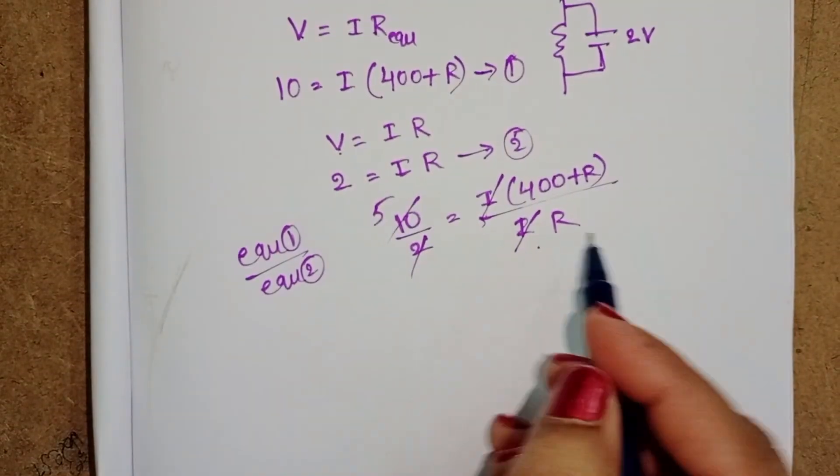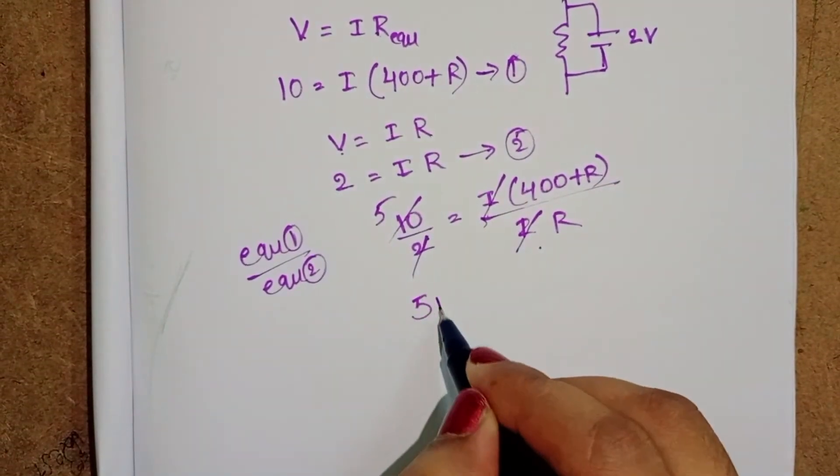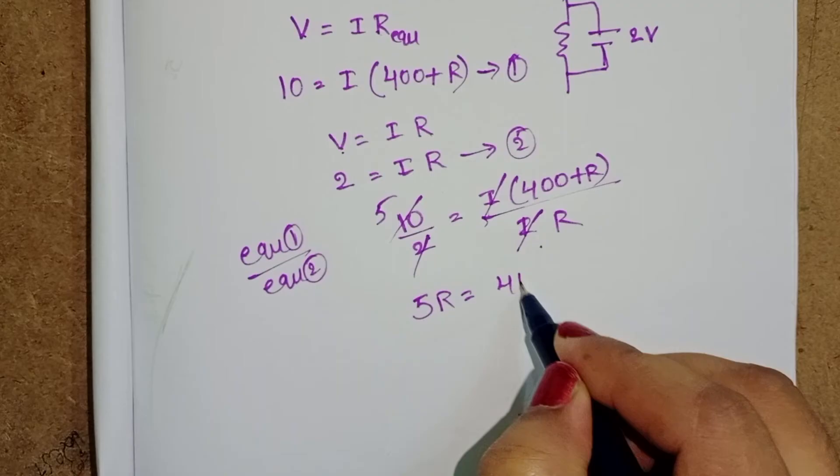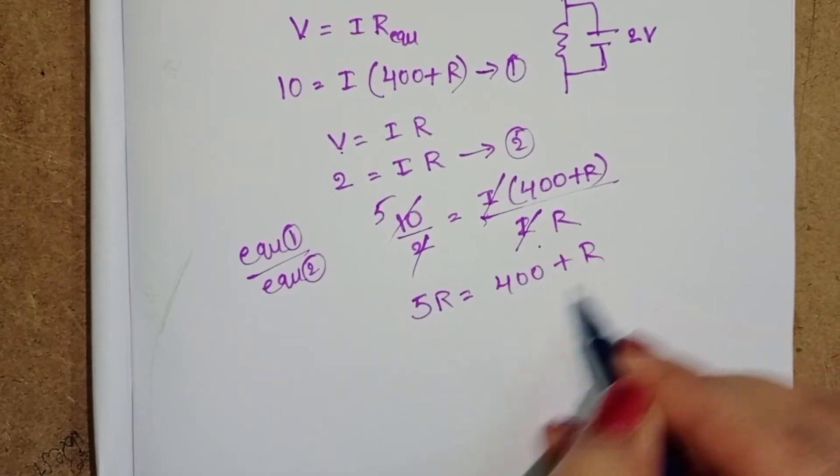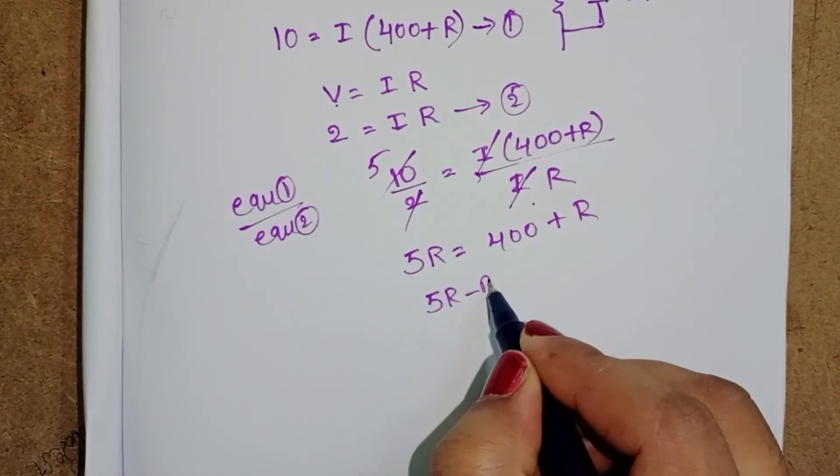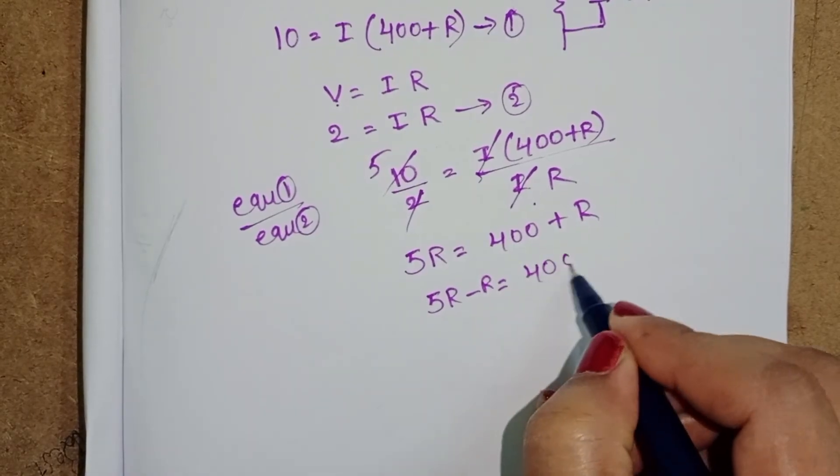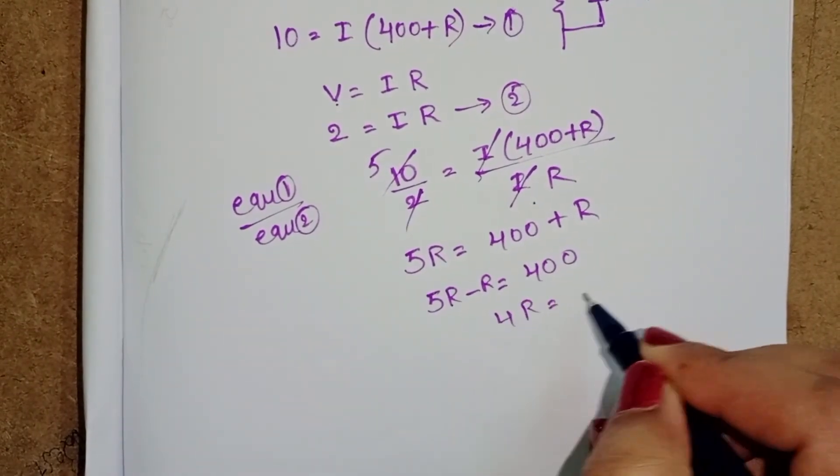Here 2 1's, 2 5's. Take cross multiplication. 5R is equals to 400 plus R. 5R minus R is equals to 400. 4R is equals to 400.